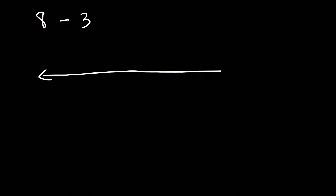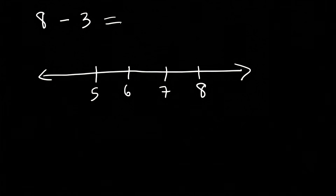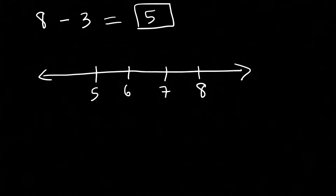Now let's focus on subtracting integers. What is 8 minus 3? When subtracting, you travel towards the left. Start with 8 and travel three spaces to the left: 7, 6, 5. So 8 minus 3 is positive 5, and it's just that simple.